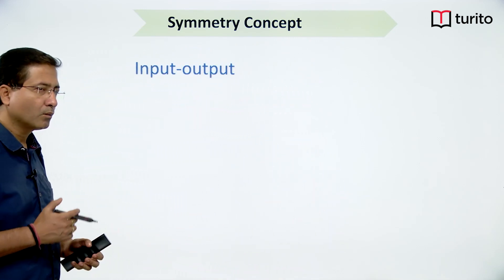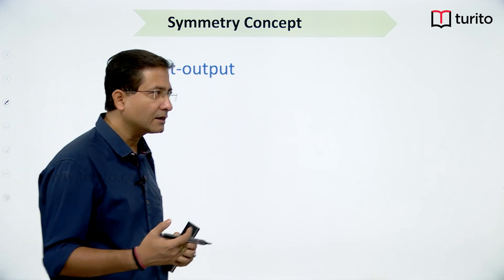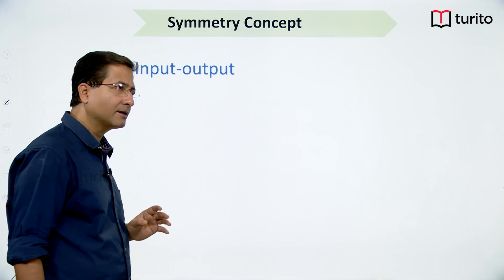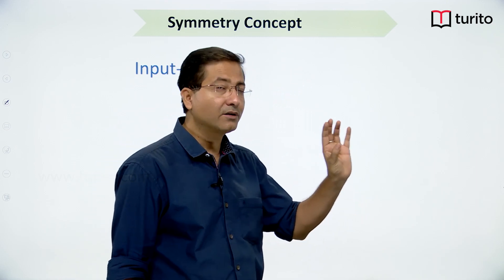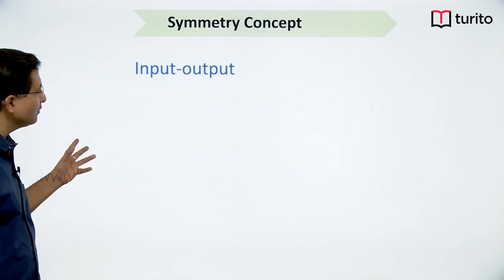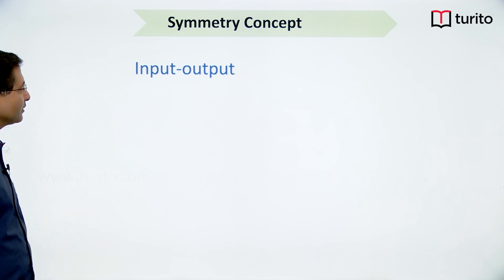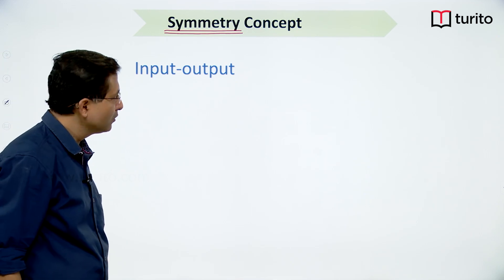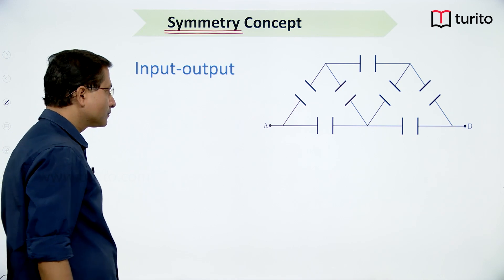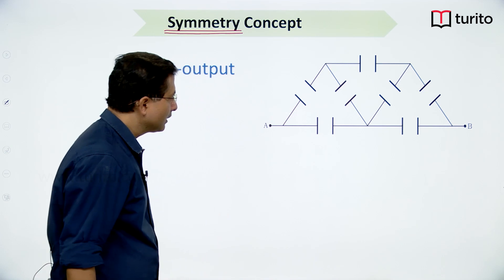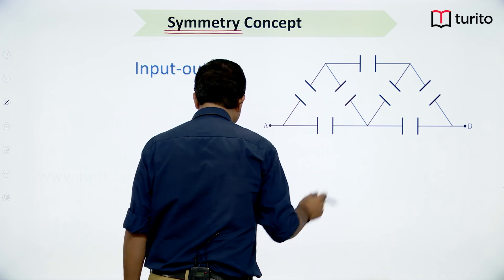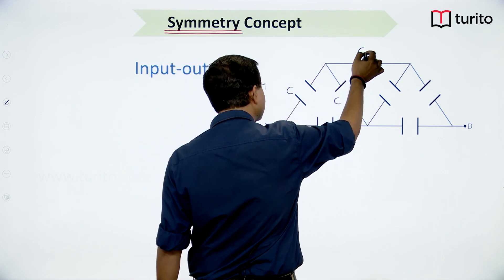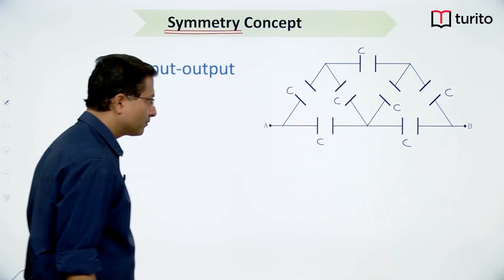Input-output symmetry means whatever we see in the circuit from the input side, we see the same circuit from the output side. If a circuit has input-output symmetry, the way current enters must be the same as the way current leaves. Let us look at a simple example to understand input-output symmetry, where all capacitors have capacitance C.